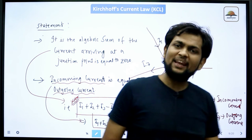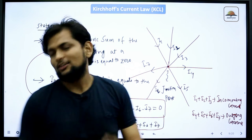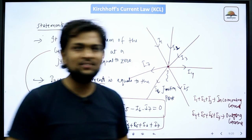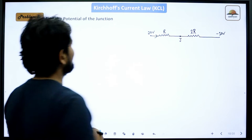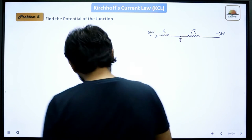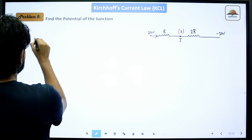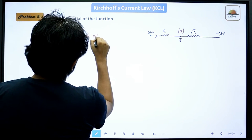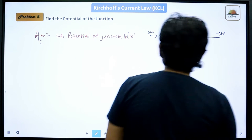Now we will see many questions based on Kirchhoff's Current Law. Let's begin the question series. The first question: find the potential at the junction J. I am assuming the potential at the junction is X, and we have to find the value of X.